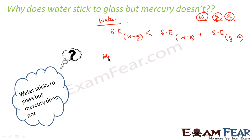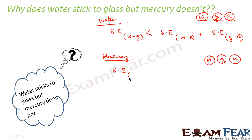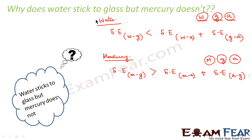Whereas on the other hand, if you consider mercury — in case of mercury we have three things again: mercury, glass, and air. In case of mercury, the surface energy between mercury and glass is not smaller; rather it is greater than the surface energy between mercury-air plus the surface energy between air-glass. Because of this basic concept, water sticks to glass whereas mercury does not.